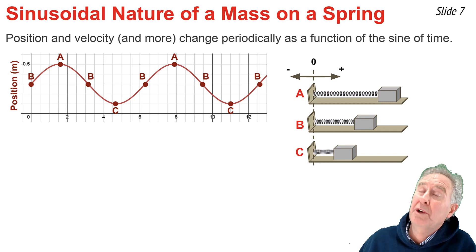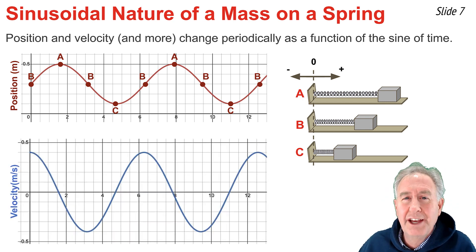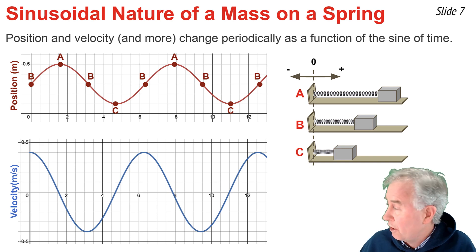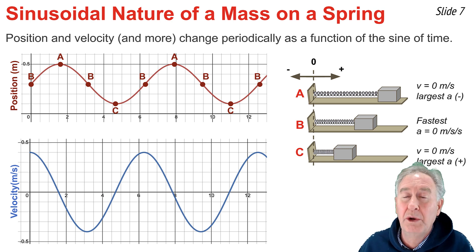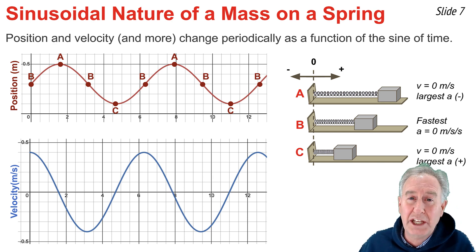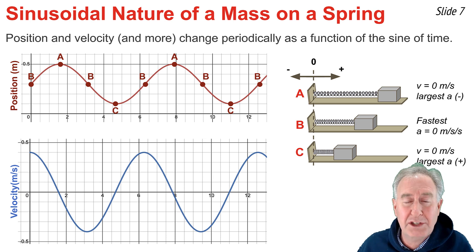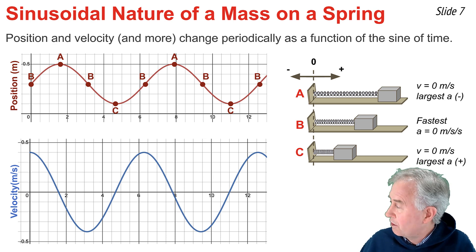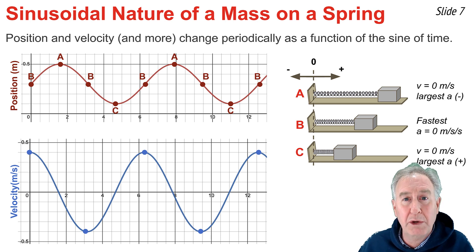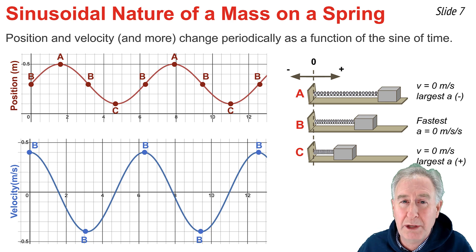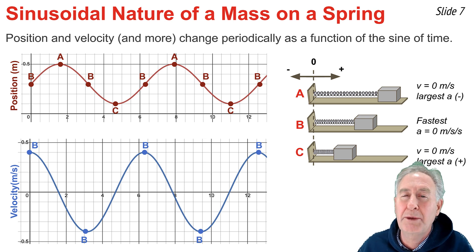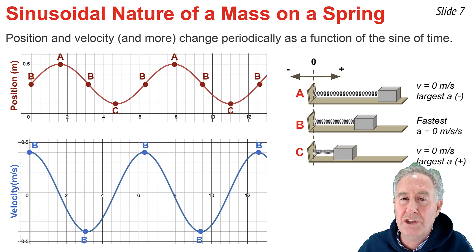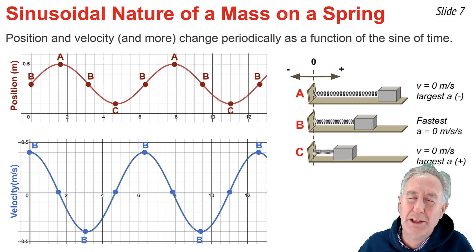For a mass vibrating on the horizontal spring, the velocity-time graph is also sinusoidal. To identify locations A, B, and C on this graph, recall that the velocity is zero when the mass is at locations A and C — the two extreme positions — and the speed is greatest when the mass is at location B. On the velocity-time graph, the high points and low points correspond to location B, since those are the times of maximum speed.